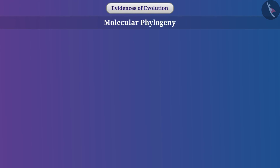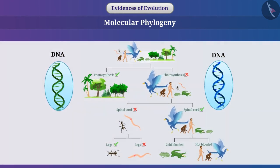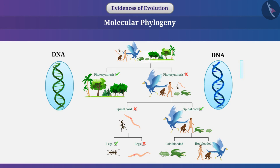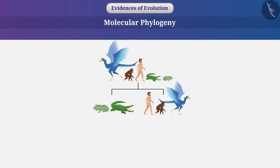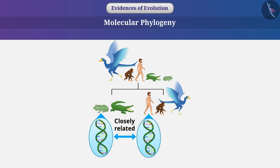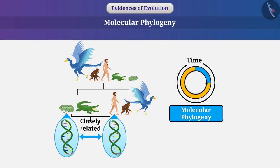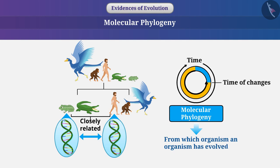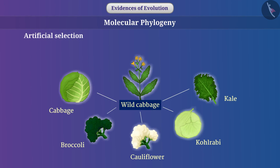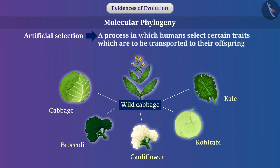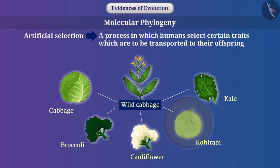Molecular phylogeny: The changes occurring in DNA during reproduction are a basic event in evolution. These changes progressively accumulate in the next generation. If the DNA of two organisms are closely related, it means the two organisms have a close relationship. Molecular phylogeny deals with tracking how these changes took place in the past, and from this, it can be identified from which organism an organism has evolved. Some species have evolved from artificial selection — a process in which humans select certain traits to be passed to offspring. Artificial selection from wild cabbage produced variations such as cabbage, broccoli, cauliflower, kohlrabi, kale, etc.